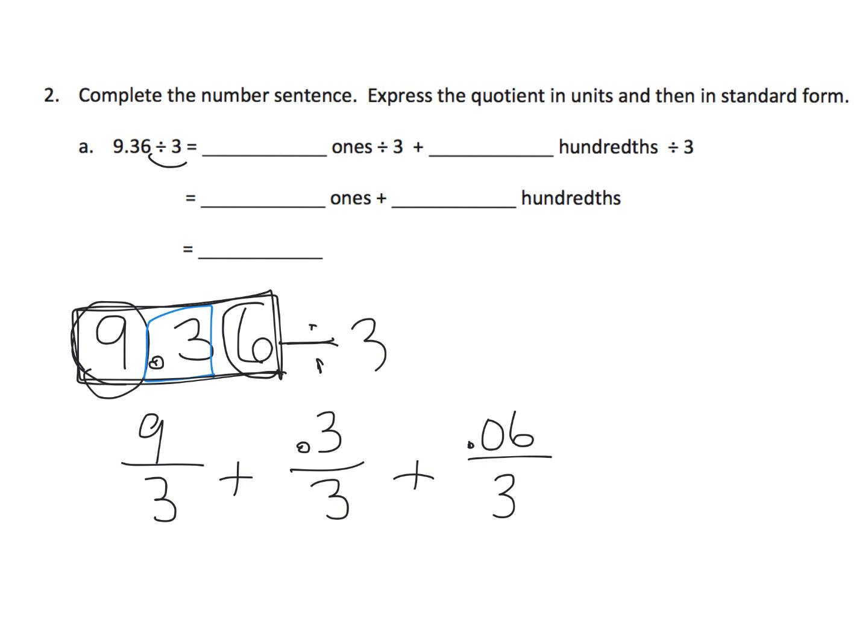They're just writing it out in unit form. We've got 9 ones divided by 3, plus whereas I broke it up into three pieces, I broke up that 3 tenths and wrote it as 3 tenths versus the 6 hundredths. They are going to combine this. It says 36 hundredths, so it's going to be 36 hundredths divided by 3. You could combine this into a single problem.